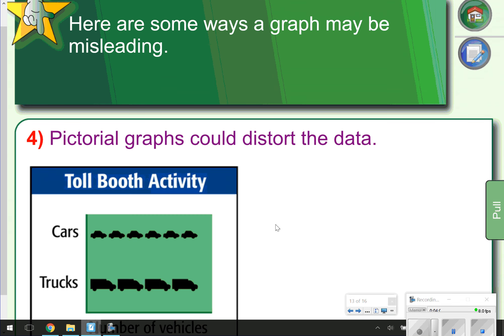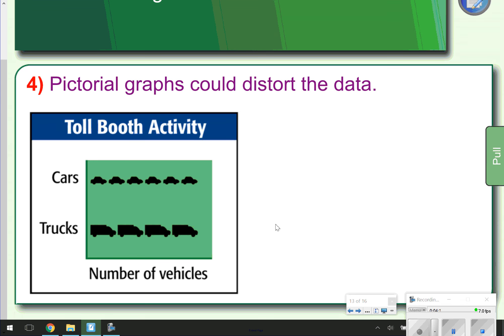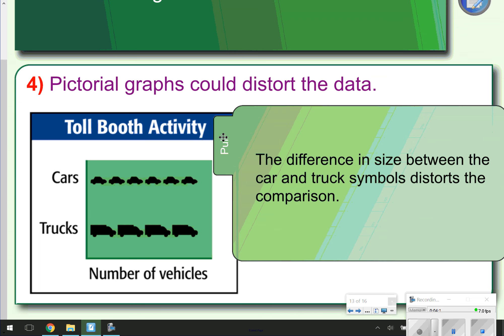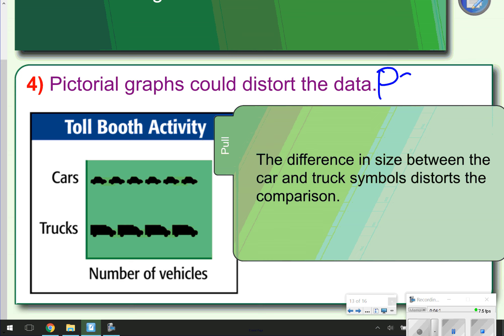The last way a graph is misleading is when pictorial graphs distort the data. Notice that in this graph, the difference in size between the cars and the trucks do not give us an accurate comparison. The trucks need to be the same size as the car in order to give us a better comparison. Again, take the time to pause the video, write down the fourth way that graphs can be misleading, and a picture that accurately represents what this is talking about. Click play when you're ready to answer the last slide.